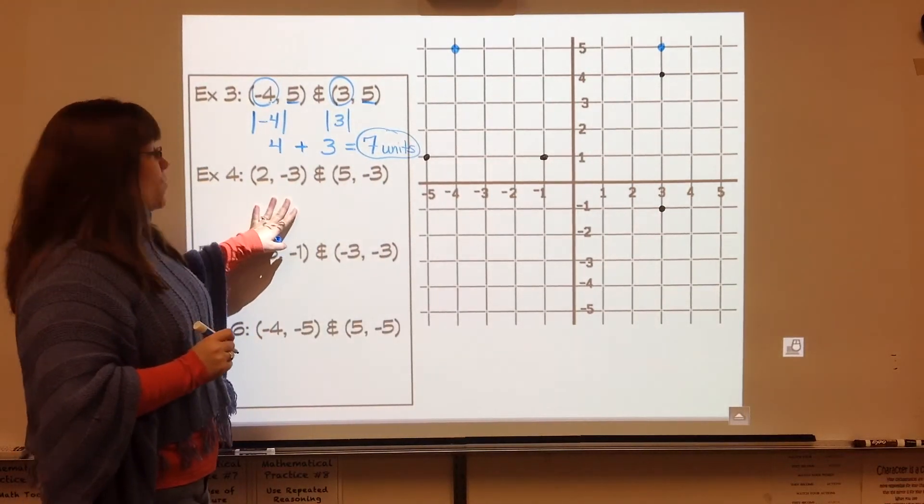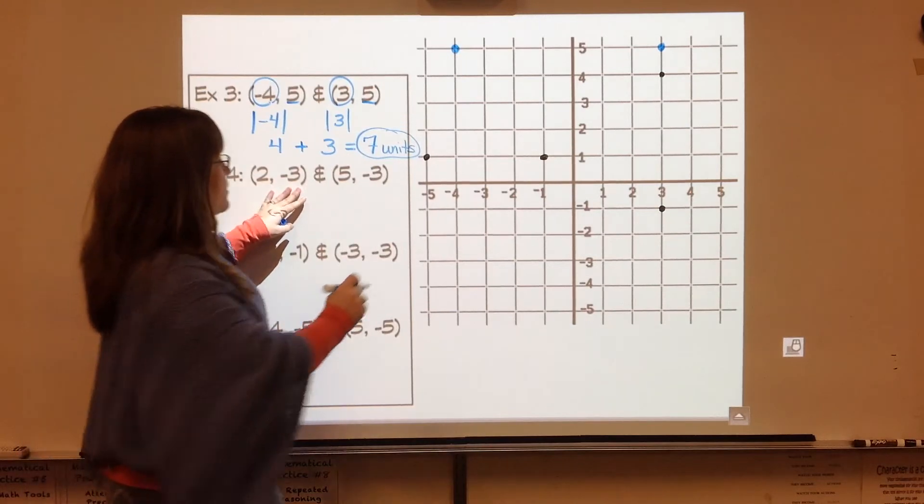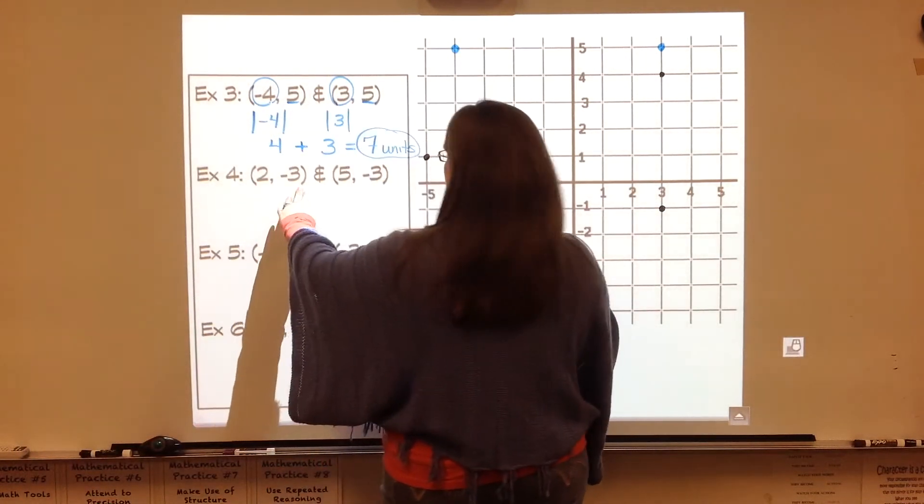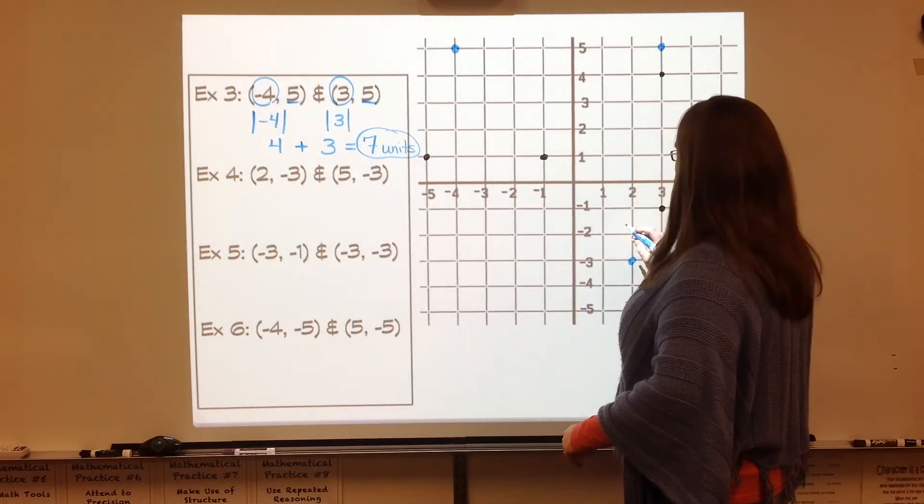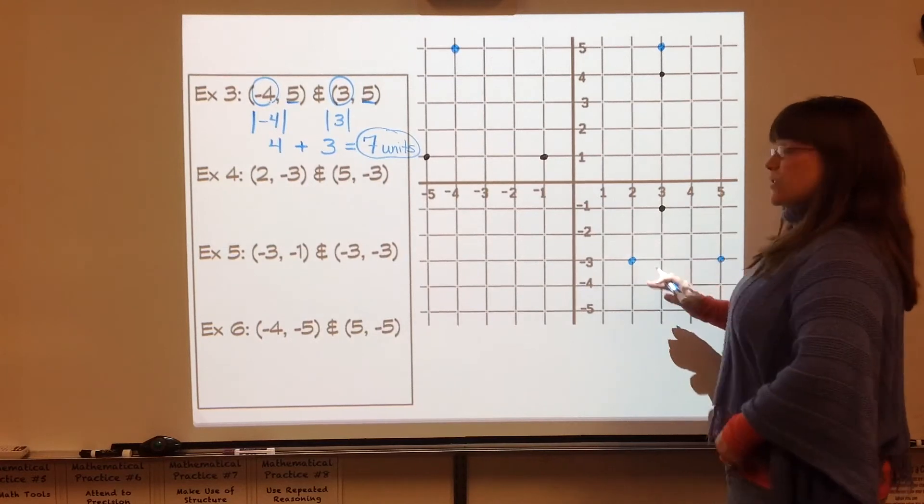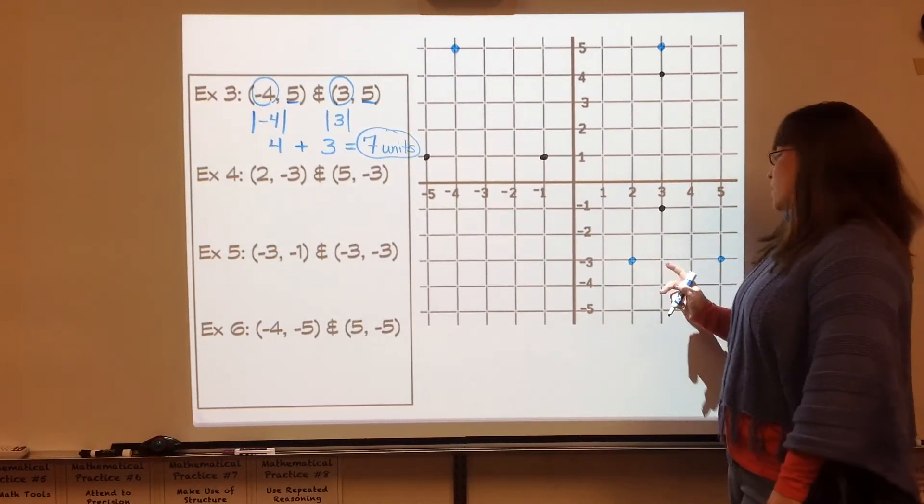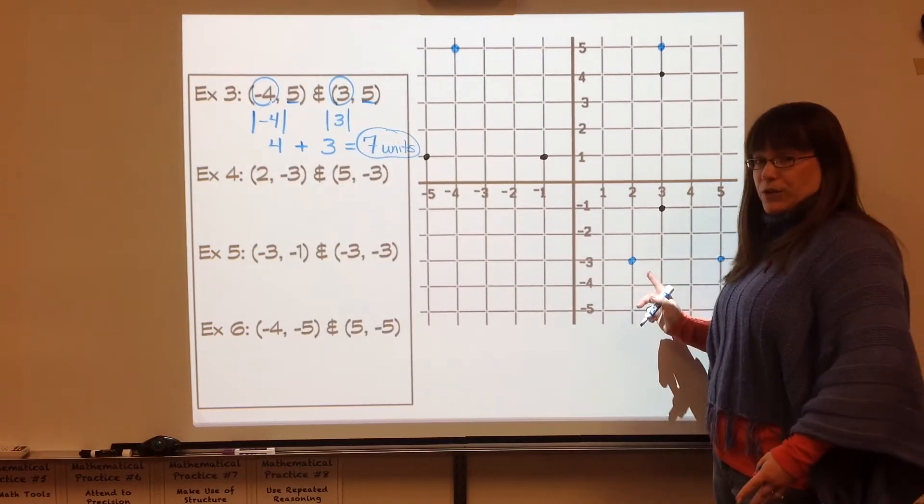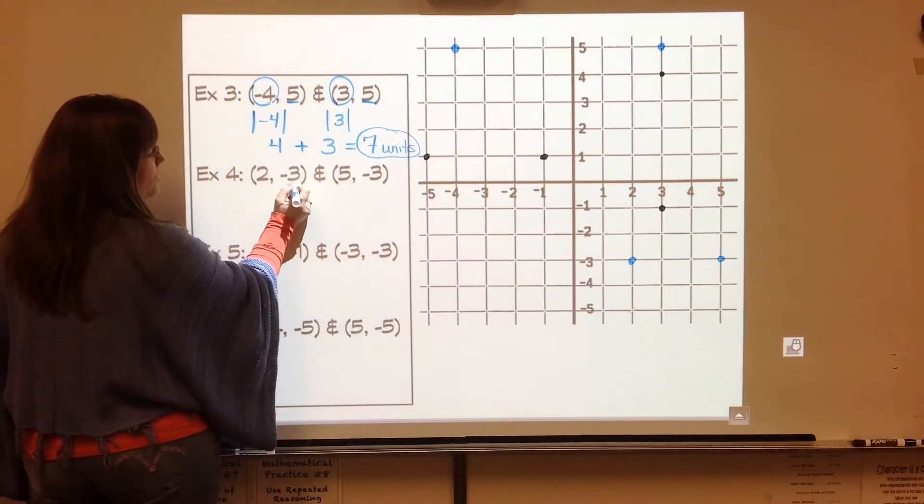Let's try example four. Two comma negative three. I'm going to graph that first. Two comma negative three. And five comma negative three. This is another example of it being in the same quadrant. So yes, I can see that there's three units apart, but I'm going to go over here and prove that using absolute value.